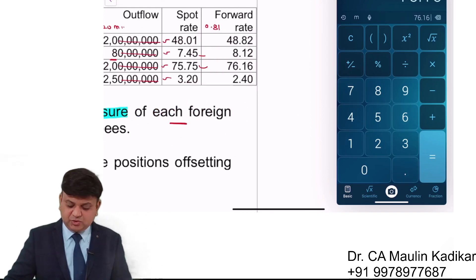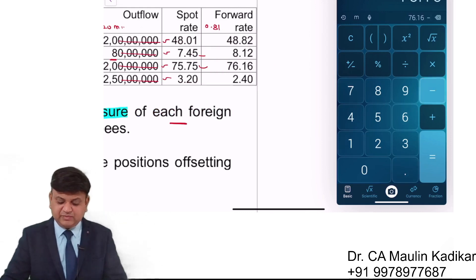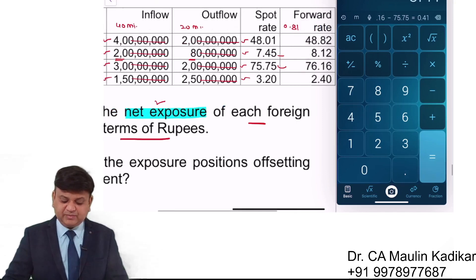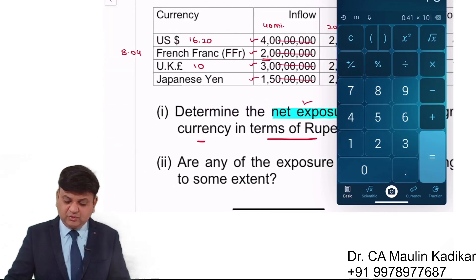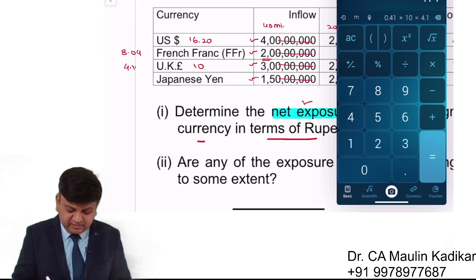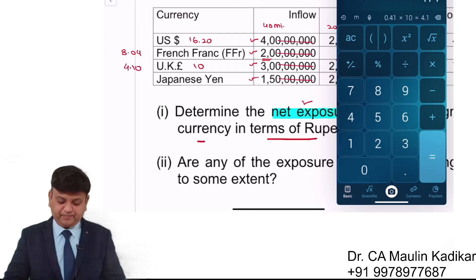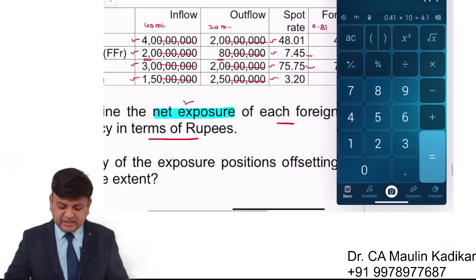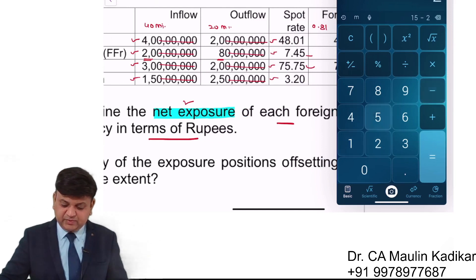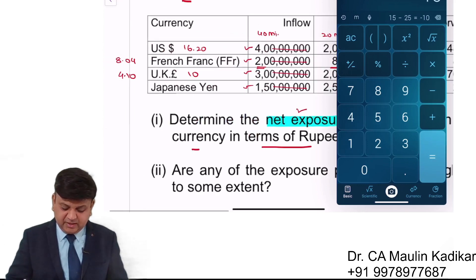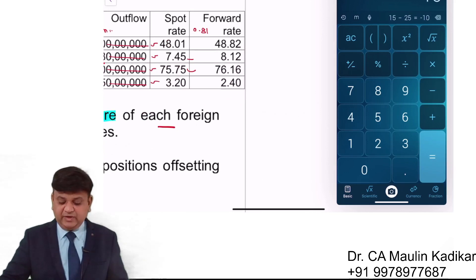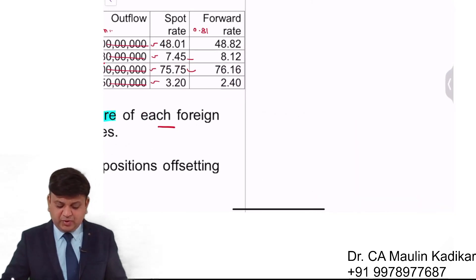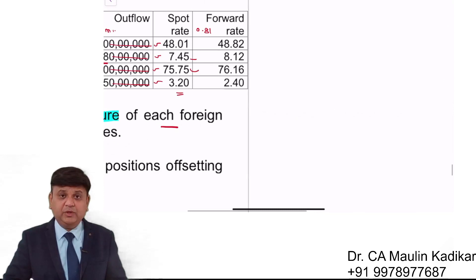We are very lucky that the Pound currency is appreciated. The spot rate for the Japanese Yen is 3.20 rupees per yen, and after that it becomes 2.40 rupees per yen. For Japanese Yen, 15 minus 25 — so the net is a payment position.